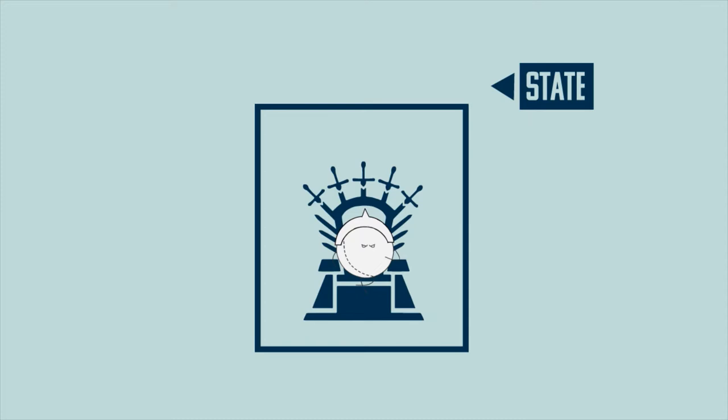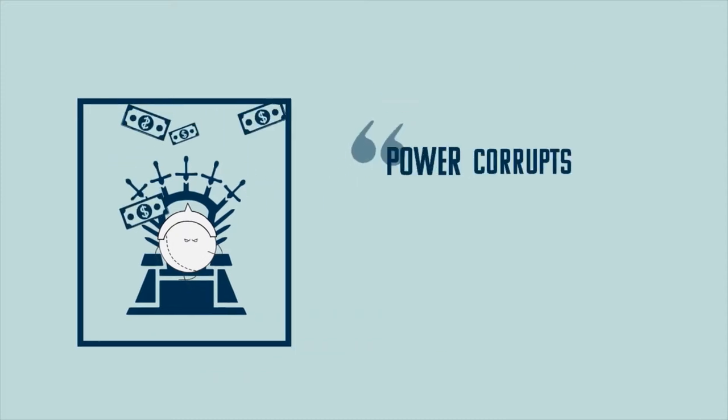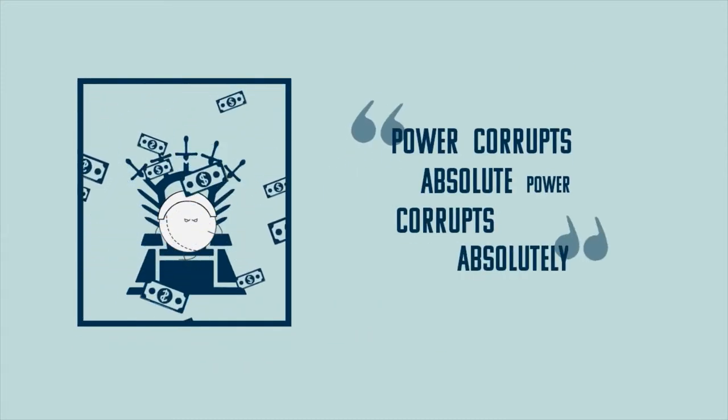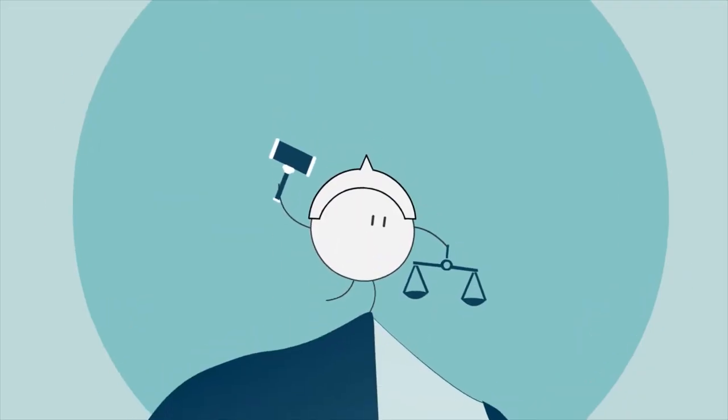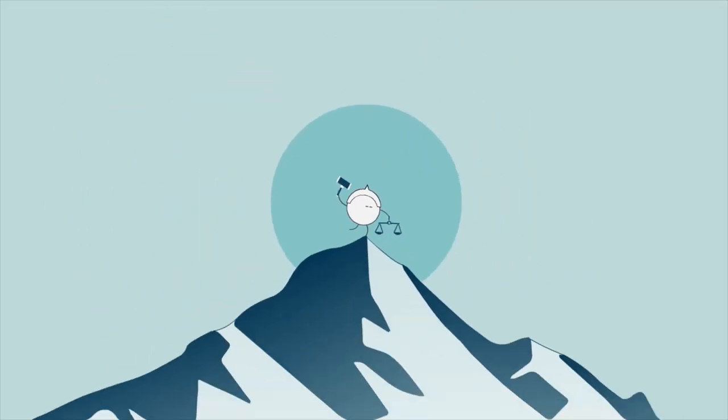The assumption is that every kind of power tends to corrupt, and absolute power tends to corrupt absolutely. Hence, this theory places judicial control at the top.